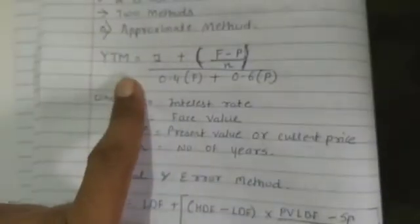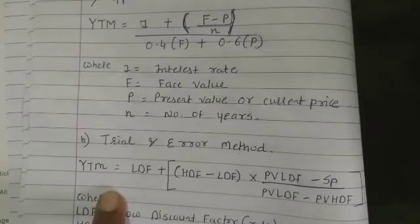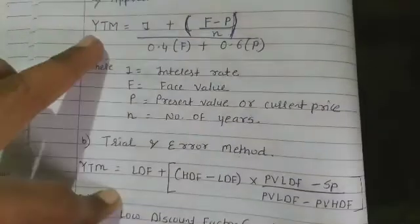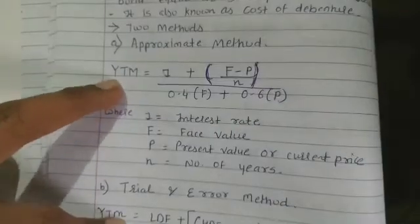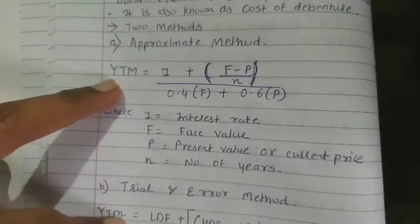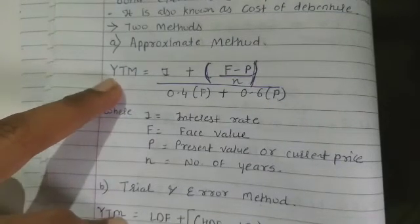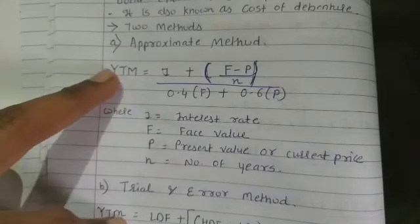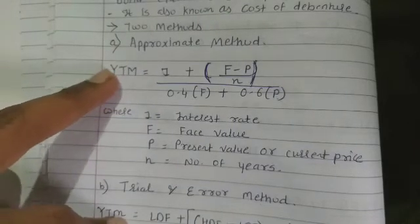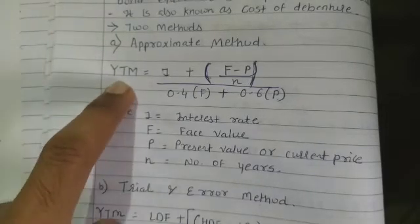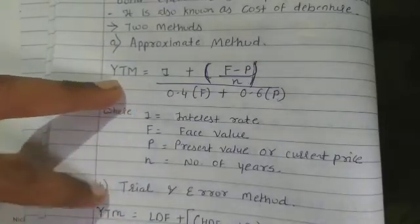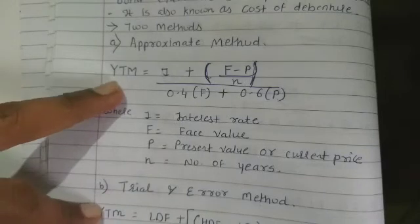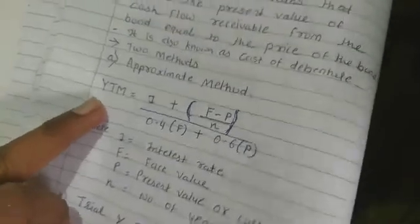When you do the sums, both the approximate method and the trial and error method will give the same answer. Both methods are considered in university exams, so we need to solve using both methods to avoid losing marks.